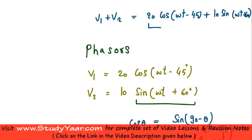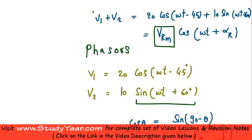So I want to express this as a sinusoidal voltage. Currently, it is sum of two sinusoidal voltages. I want to express it as a sinusoidal voltage which looks something like Vrm cos(ωt + αr). So I want to express V1 + V2 as this, where this is the peak value of the sum of these two voltages. And this is the phase of my resultant voltage V1 + V2.